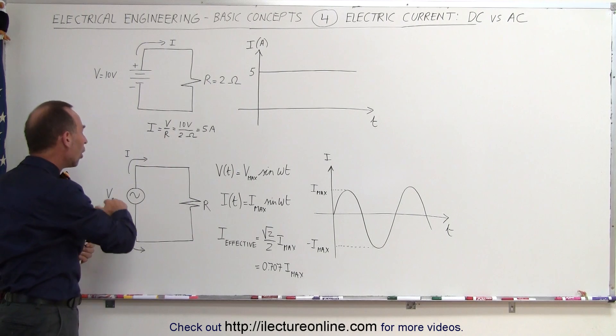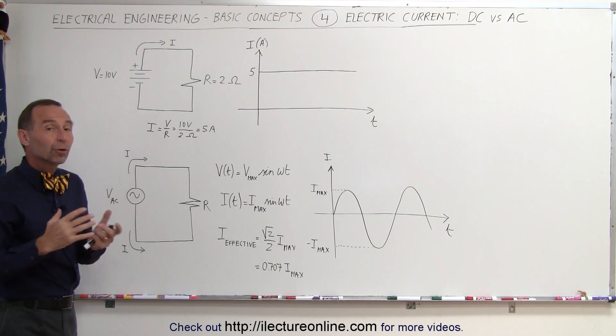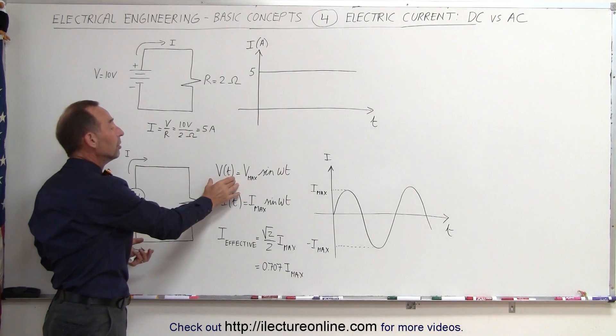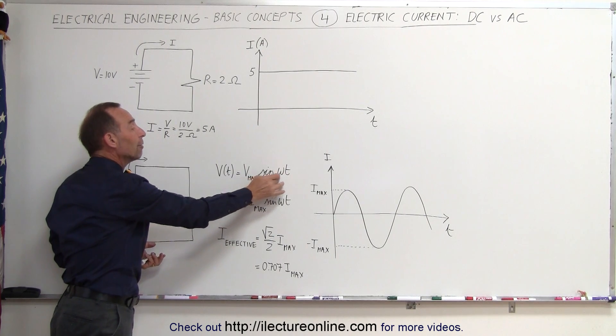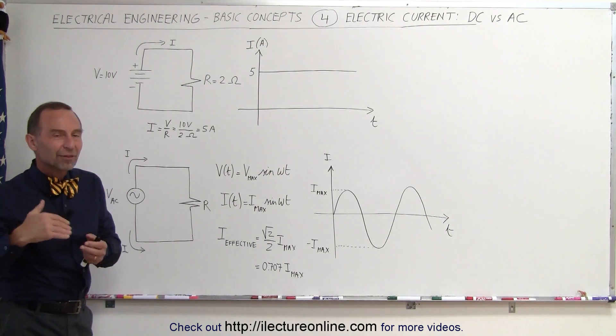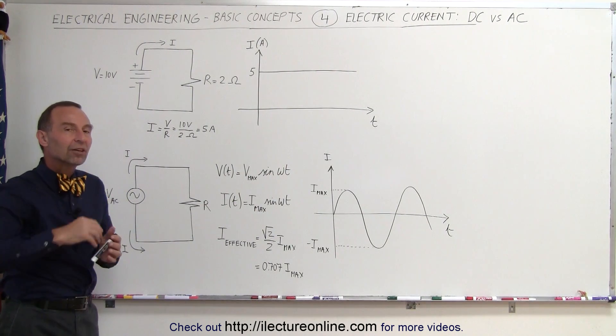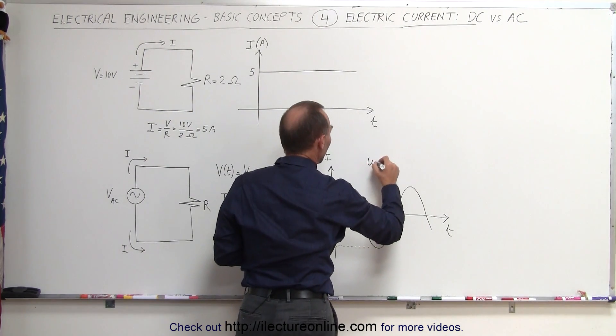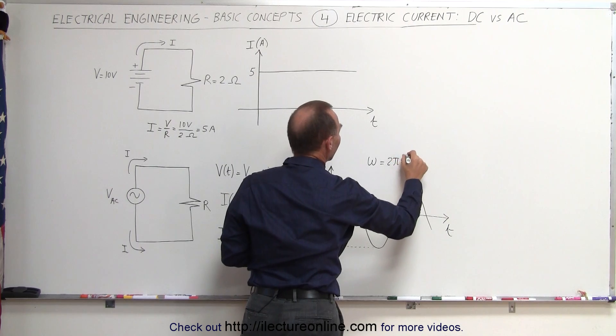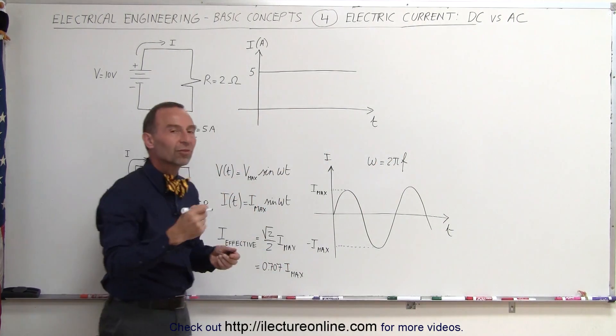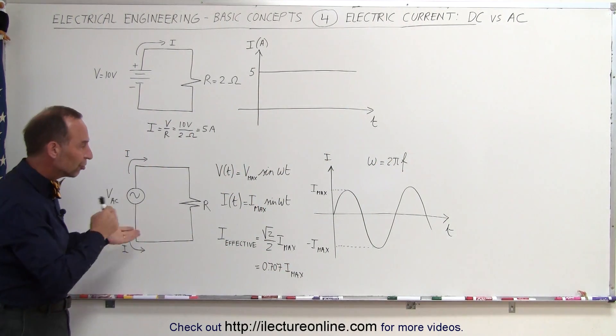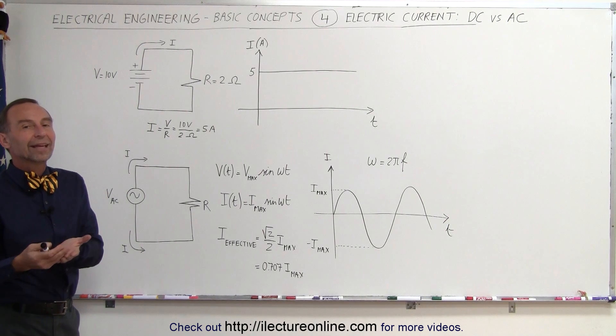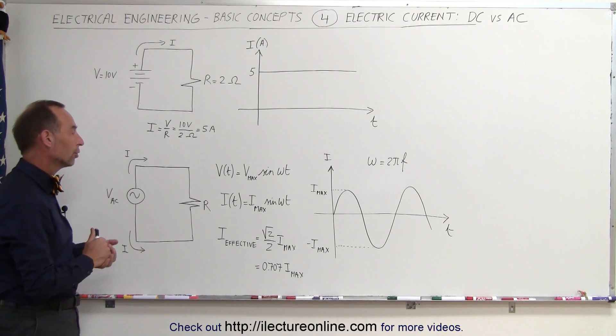Now what if the voltage source is an alternating voltage source? It puts out a voltage according to this equation, v max times the sine of omega t. Omega is the frequency of the oscillation of the circuit. And when you write it like this, omega is equal to 2 pi f, where f is actually the frequency of the changes in the voltage. Omega is then the radial frequency according to that.